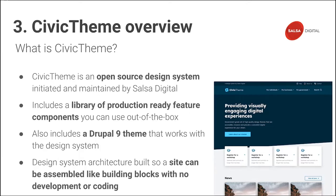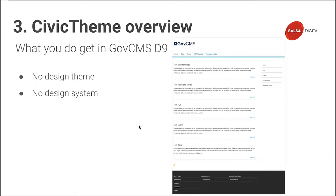Like many design systems, it has a library of already existing feature components you can use out of the box, and it includes a D9 theme that works with the design system. It's also built so that content authors, editors, and others within government agencies and nonprofits could build a site without needing to know any development or how to code. We're focused on GoCMS because unlike D7 and D8, there isn't a design system that comes with D9, and we wanted to help solve that problem.